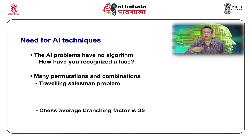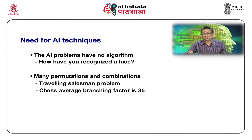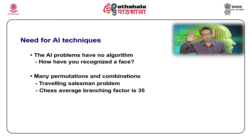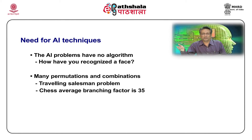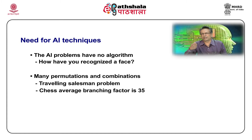If you're playing chess and you think you'll find all possible moves till the end of the game, and you give even the best supercomputer in the world that program to calculate all possible moves from beginning to end, the supercomputer itself probably cannot do it in 100 to 500 years or so. So the second point about AI technique is to find something which can handle these combinations and permutations.